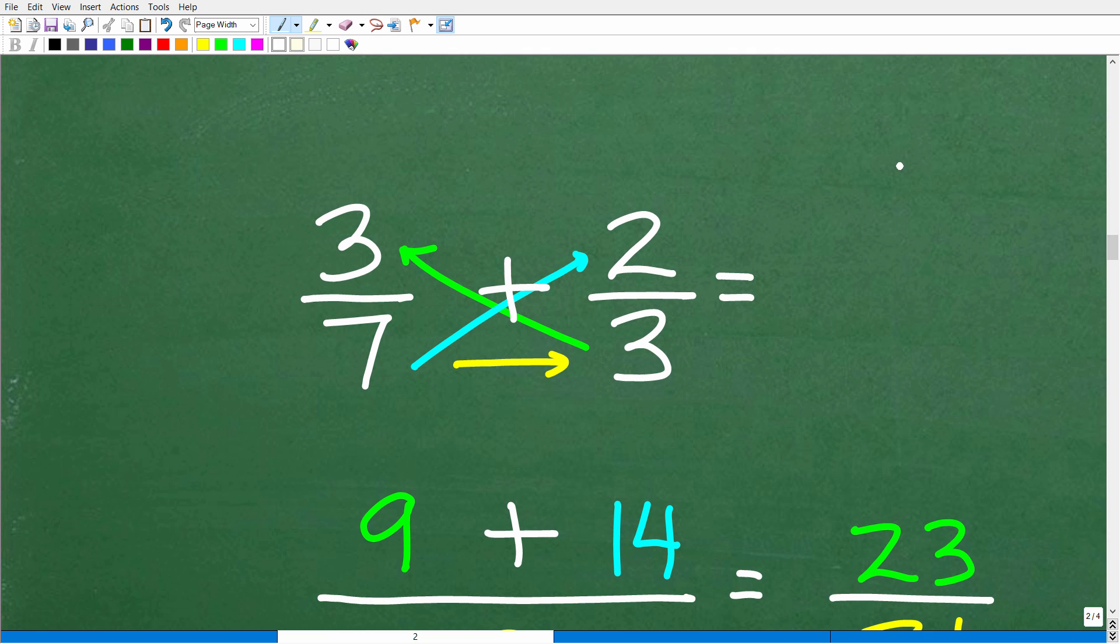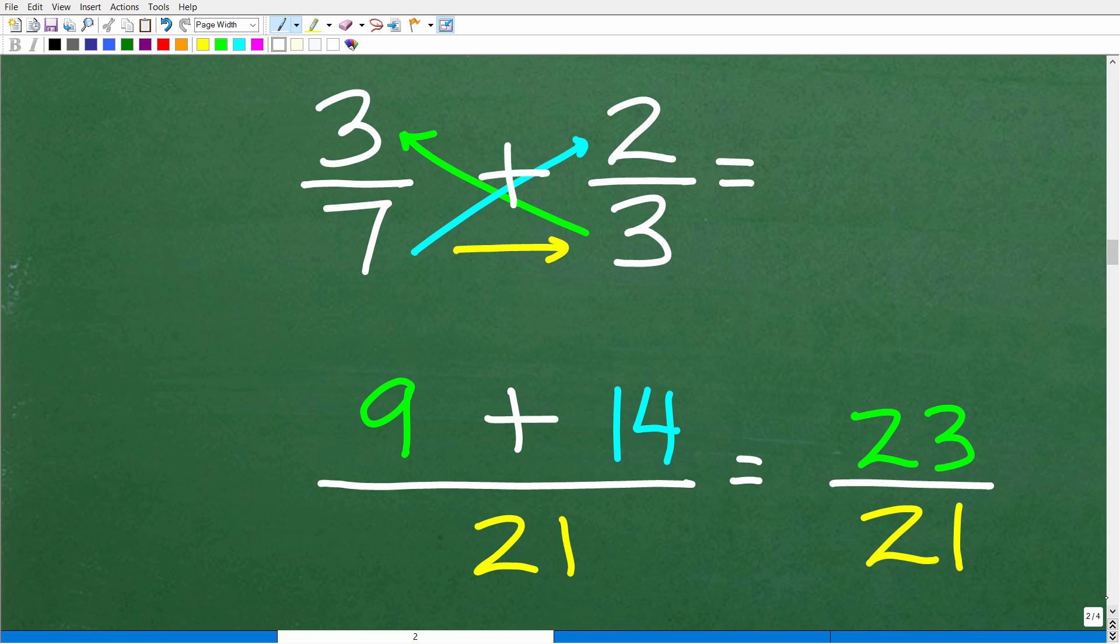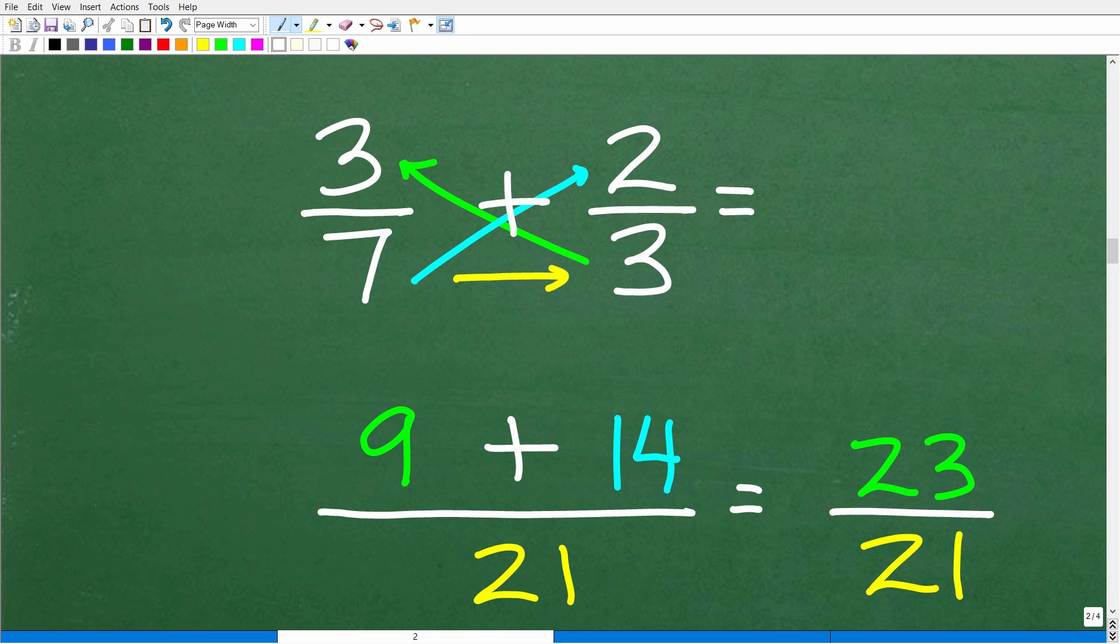Now here is this awesome shortcut. I have a name for it: the bow tie method. I'm going to draw a little stick figure with a bow tie. Why am I calling this the bow tie method? Because I'm going to be using a pattern that resembles a bow tie. You have to do this method in the exact order I'm going to teach you. If you do this out of order, you will get this wrong. I'm going to add these fractions without finding the LCD.